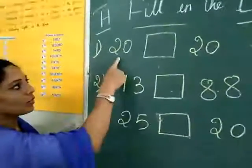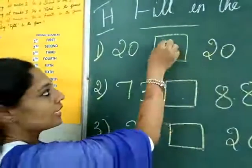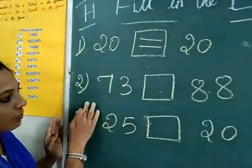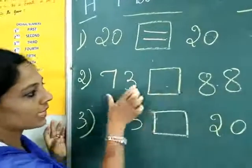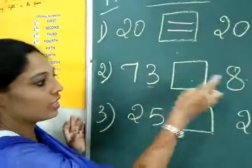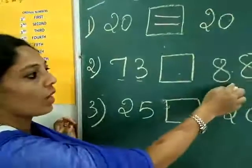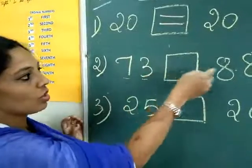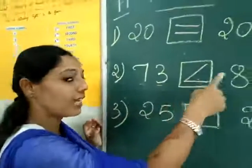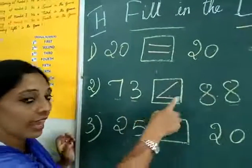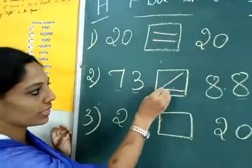First example: twenty and twenty. Here also zero, here also zero. In the tens place also, both are two. That means they are the same, so write equals. Second example: seventy-three and eighty-eight. When there are two-digit numbers, compare with the tens place. Here eight is bigger than seven in the tens place, so eighty-eight is bigger. The sharp point points towards the smaller number, seventy-three. So write: seventy-three is less than eighty-eight.